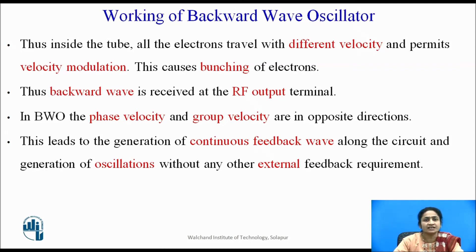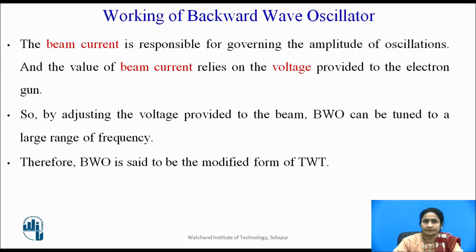All electrons inside the tube travel at different velocities, permitting velocity modulation. The electrons that give up their potential energy cause bunching. Thus the backward wave is received at the RF output. In the backward wave oscillator, the phase velocity and the group velocity are in opposite directions. This leads to the generation of continuous feedback along the circuit and generation of oscillations without any external feedback required, because the device itself produces its own feedback. The beam current governs the amplitude of the oscillation, and the value of the beam current depends on the applied voltage to the electron gun. By adjusting the voltage provided to the beam, the backward wave oscillator can be tuned over a large range of frequencies.